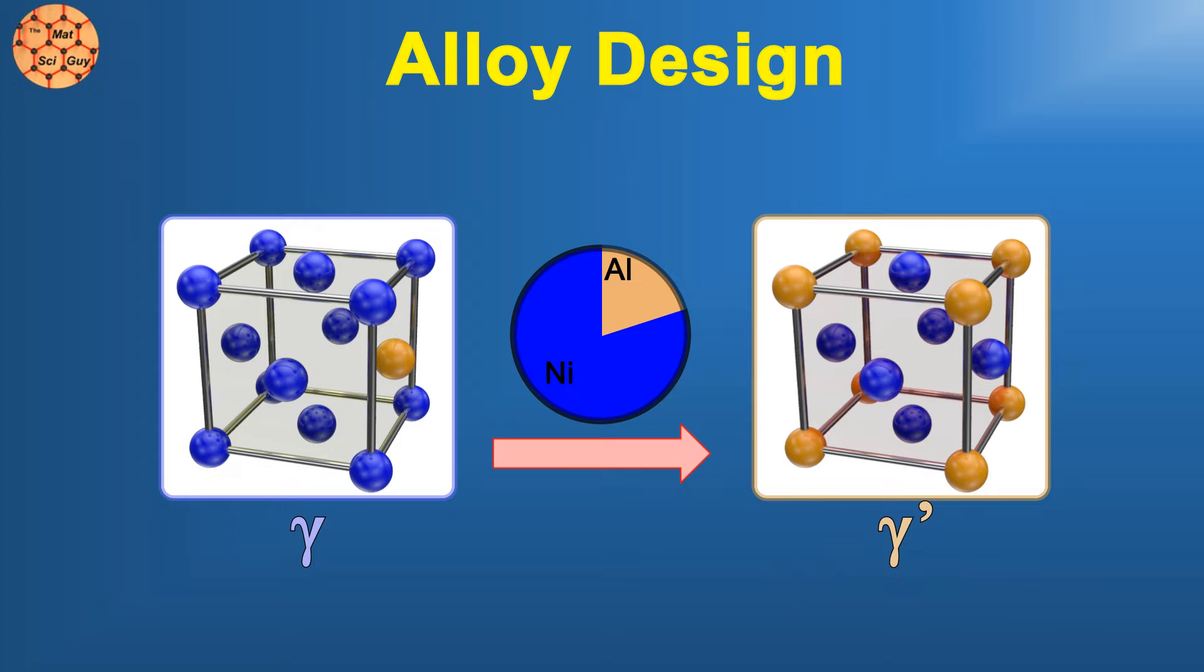At first, this might seem like a pretty minor difference. The basic shape and structure of these two phases is almost identical, and both are composed of nickel and aluminum, but their properties are quite different. When metal atoms form ordered structures like this, it's called an intermetallic. Since this structure wants to retain this ordered arrangement, dislocation movement and atomic diffusion are generally suppressed.